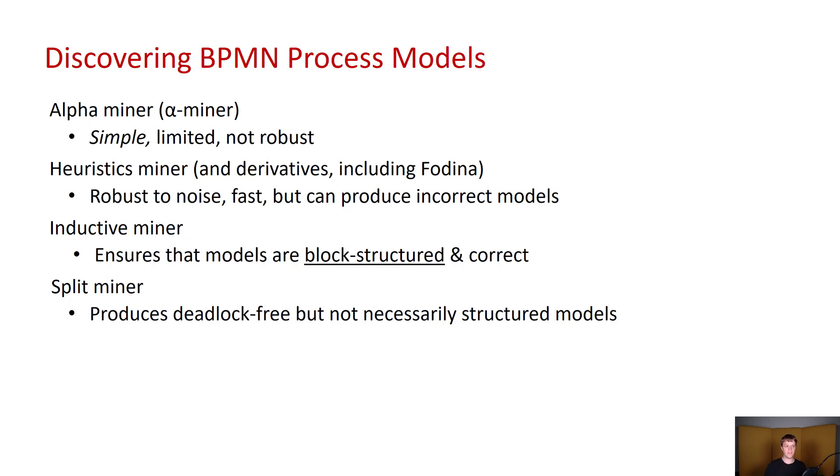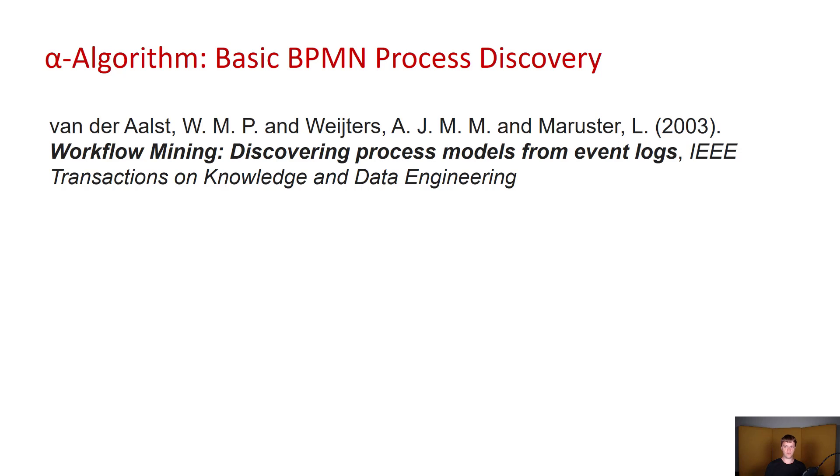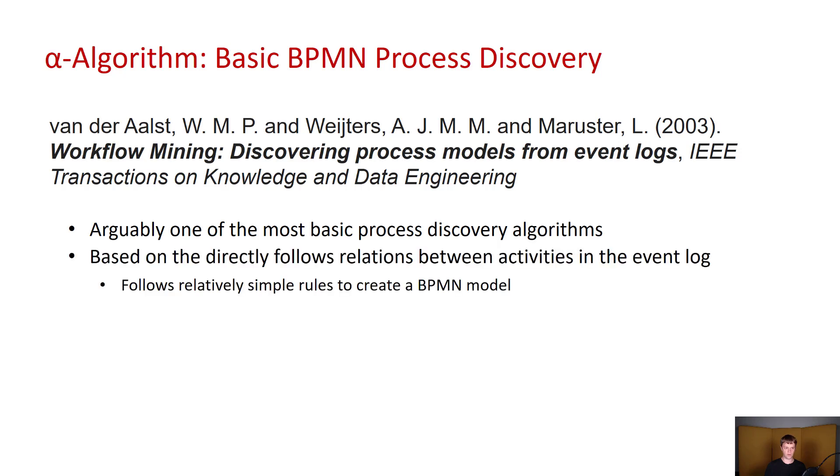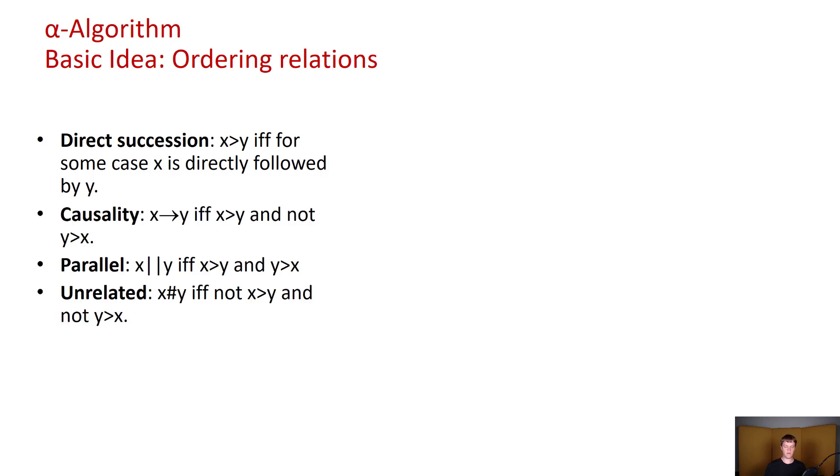So as mentioned we will begin with the alpha miner. And the reason why we begin with the alpha miner is that it is a relatively straightforward algorithm that you could actually do on paper if you really wanted to. It was first introduced in 2013 and it is arguably one of the most basic process discovery algorithms. It is based on the directly follows relations between activities in the event log and follows relatively simple rules to create a BPMN model. The basic idea of the alpha algorithm is to rely on ordering relations and those relations there are four types. We have direct succession, we have causality, parallel and unrelated.